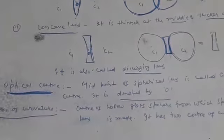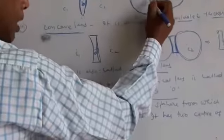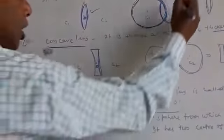One term is here: center of curvature. You are seeing here, it is a hollow glass sphere. C1 is the center.